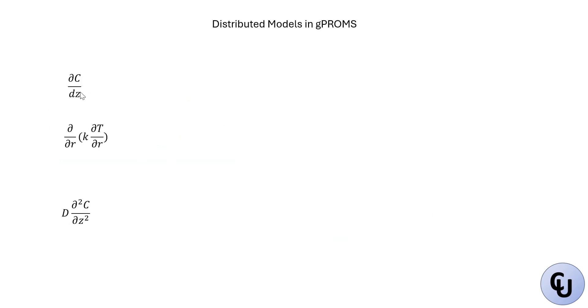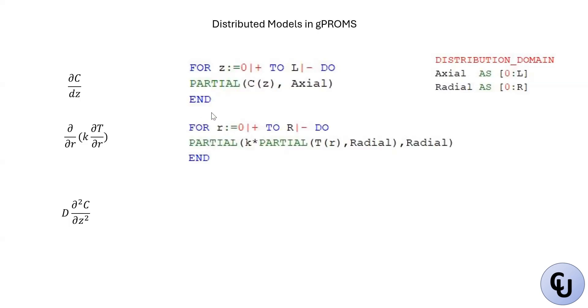How do you write these equations in gPROMS? This dC/dZ, as I said before, you need a for loop. You declare this axial domain earlier, the distribution domain. The axial is the one that goes through Z and the radial is the one for R. It's partial C, then z, then axial. It's just first order. To write the second one, it's going to be for R starting from zero up to R, which is the end of the domain, then partial. This is the first derivative operator. Partial, then you have k multiplied by partial T, R, then radial. This radial is for this domain and the other radial is for that domain. For the last one, this is second order. You have D multiplied by partial C, z, comma, axial, comma, axial. You need axial twice because this is second order derivative.